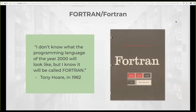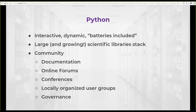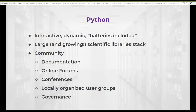Python requires less programming experience and expertise, which makes it a good choice for scientists sometimes, who are not necessarily trained in programming or computer science, but need to use scientific code in their research. In addition, there's a large ecosystem of packages that has developed around it, powered by a real open source community. This means there's a lot of documentation, online forums where users can talk to each other and ask questions, and many conferences organized around the Python language and its libraries. There are also many locally organized user groups and a sense of governance, with structure and organization to most of these communities.